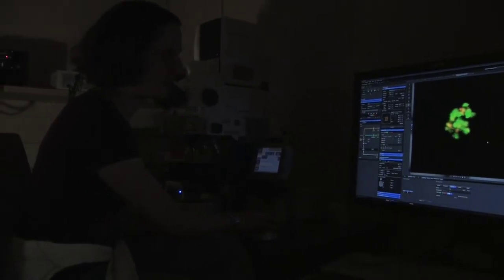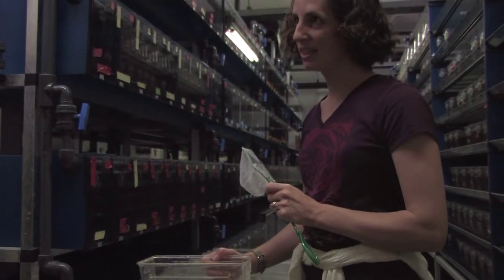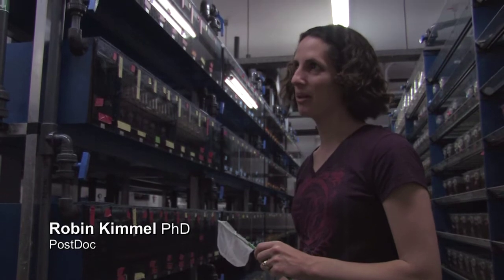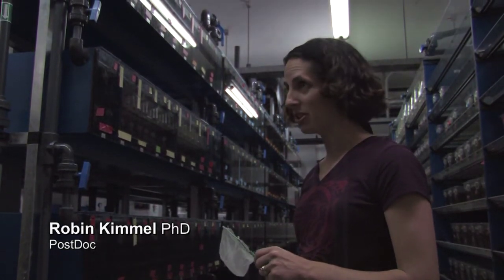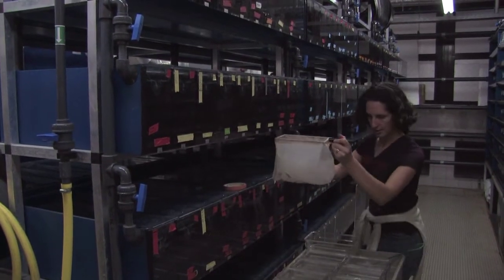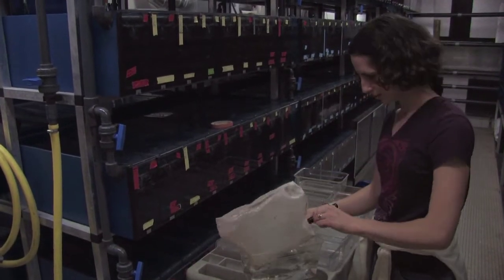These fish have a GFP expressed in the precursors for the beta cells of the pancreas. I want to know which ones are homozygous for the transgene, so I'm going to set them up with wild-type fish. And then when you get embryos the next day, you can see the clutches of embryos where they all have the transgene. That means one of the parents was a homozygote.